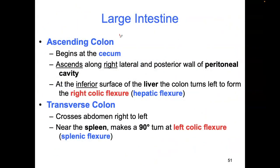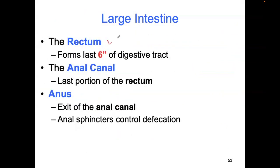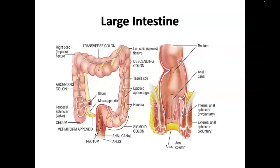To recap: ascending colon, transverse colon, splenic flexure, descending colon, sigmoid colon, and the rectum — the last six inches. Then the final portion is the anus or anal canal, which has sphincters — smooth muscles that contract to control bowel movements.